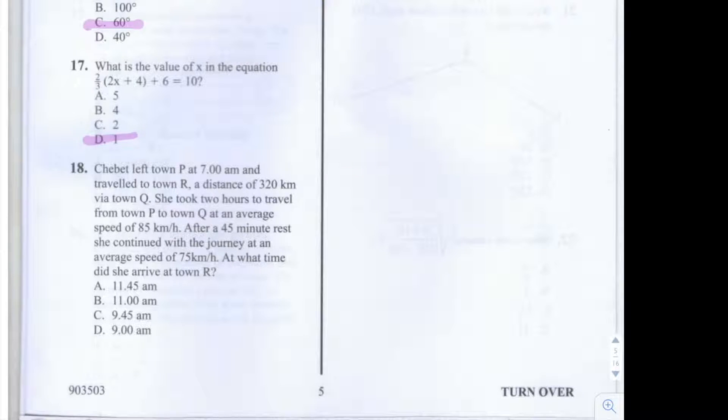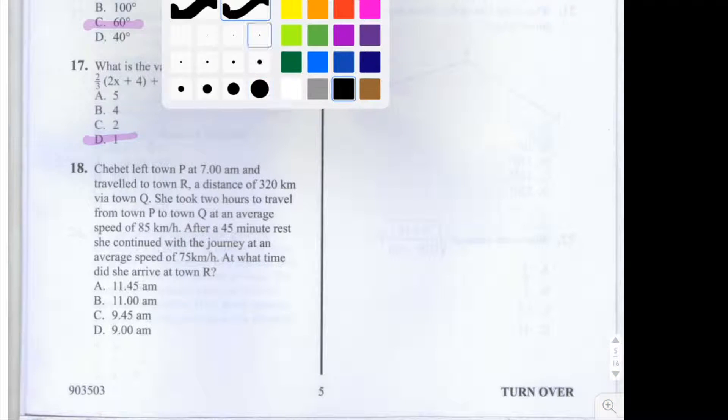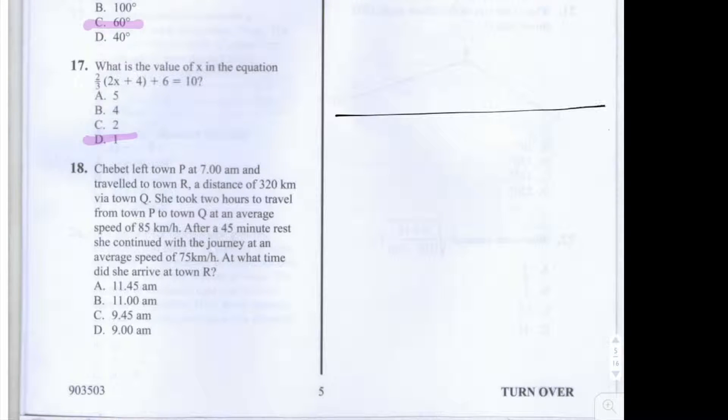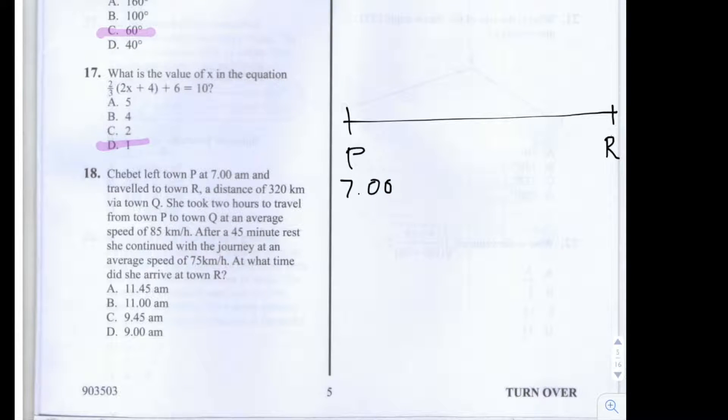So I'll draw a line here and we have a few points to label on the line P, which is her starting point and she started there at 7am. Her final destination is town R, which we'll put here at the end of the line and we have a town that she travelled via Q, which we'll put here in the middle.